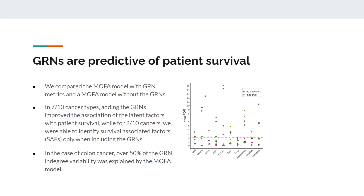We were interested to see whether adding gene regulatory networks would provide any new information or be beneficial to these JDR models. So we compared a MOFA model with the networks against MOFA models without the networks across 10 cancers, and we found that in 7 out of 10 there was actually an improvement in the association of these latent factors with survival when using the networks. In the case of colon cancer and ovarian cancer, we were actually only able to identify survival-associated factors when we included the networks, and not when we only used the other omics.